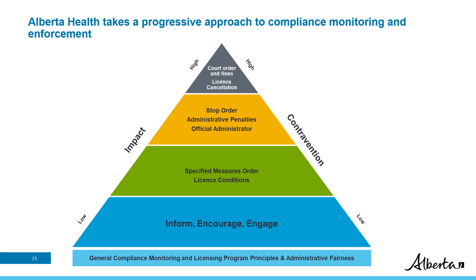A compliance and enforcement response is proportionate to the identified risk and provides the operator or provider with an opportunity to come into compliance. When the risk changes, Alberta Health may adapt the type of enforcement response and corrective actions. The enforcement pyramid starts with license conditions and a specified measures order and escalates to a court order. Enforcement rarely escalates beyond those foundational steps, but on seldom occasions there must be steps to ensure health, safety, and well-being of residents or clients via escalated enforcement, including stop orders, license cancellations, or fines.